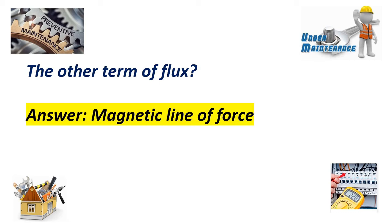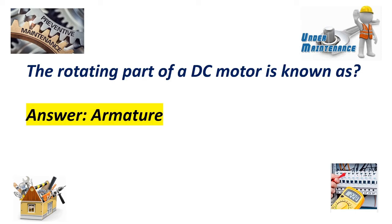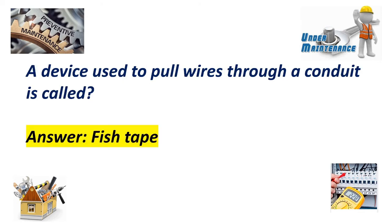The other term of flux? Answer: Magnetic line of force. The rotating part of a DC motor is known as armature. A device used to pull wires through a conduit is called fish tape.